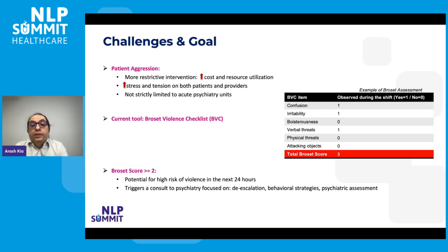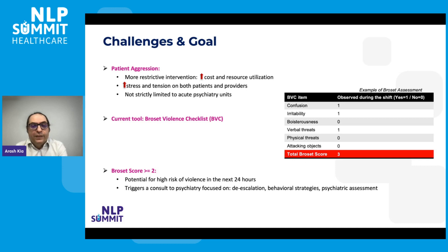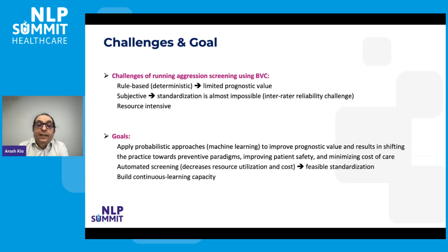The current tool is a questionnaire — the Brøset Violence Checklist — where clinicians go to the bedside and assess patients for confusion, irritability, boisterousness, and other items. It has six binary items and a total score; a score of two or greater indicates high risk. It is very subjective, has low inter-rater reliability, and has no prognostic value — the same problem as delirium. It doesn't create any advance warning window.